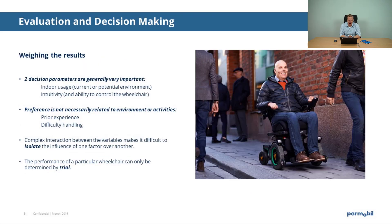So how do you weigh the results and make your decision? Two decision criteria are generally seen as more important than the others: indoor driving capabilities and the intuitivity of the platform. Indoor driving capabilities are very important because they are directly related to accessibility, and most users spend more than 80% of their time indoors. Intuitivity is important because it is directly related to the ease of use. To ensure you make the right decision, we strongly advise testing the different types of platforms before making any decision.